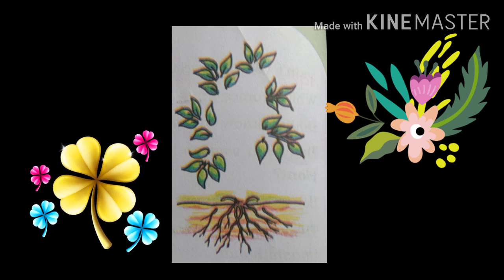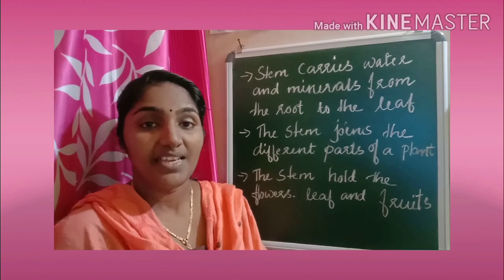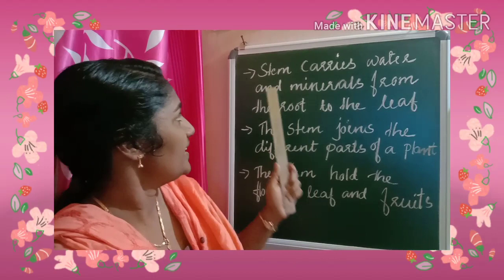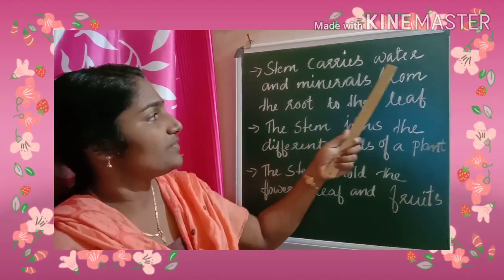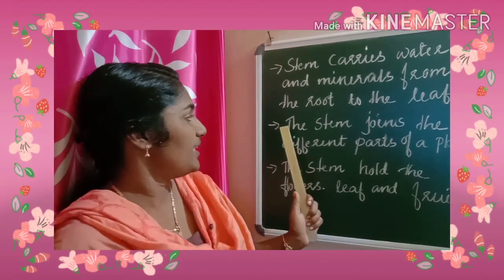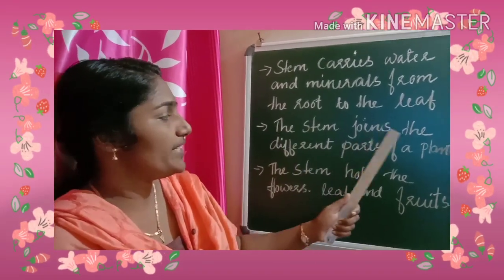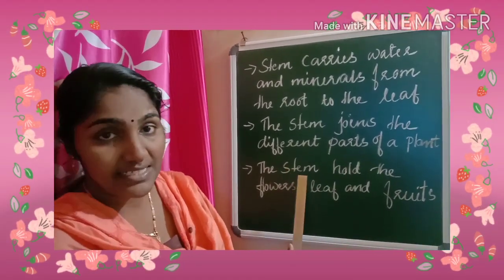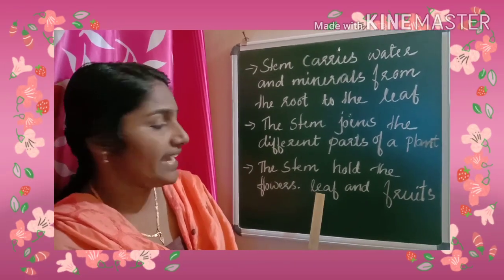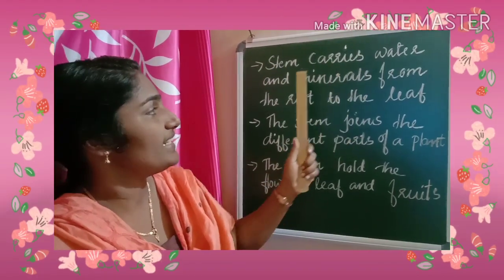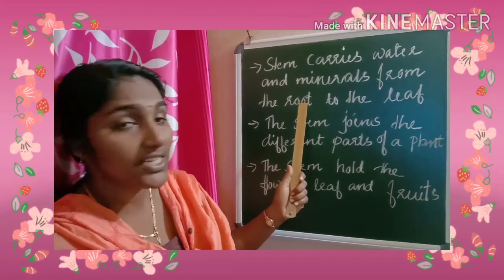In the last class we studied that roots absorb water and minerals from the soil. The stem transports the water and minerals to the leaves. The first point is: stem carries water and minerals from the root to the leaf. Second, the stem joins the different parts of a plant. Third, the stem holds the flowers, roots and leaves.